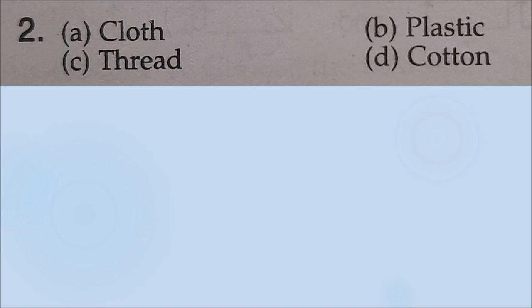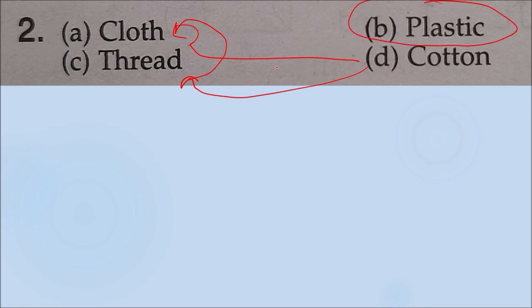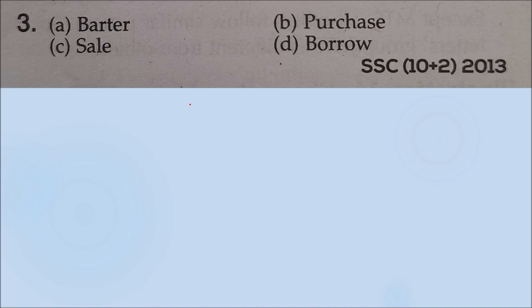Question number two: again find the odd one out. Cloth, thread, and cotton — these three terms are related to each other. From cotton you make thread, and from thread you make cloth. Plastic is a totally different entity; it is made up of a different thing with different characteristics. So the correct answer will be option B, that is plastic.